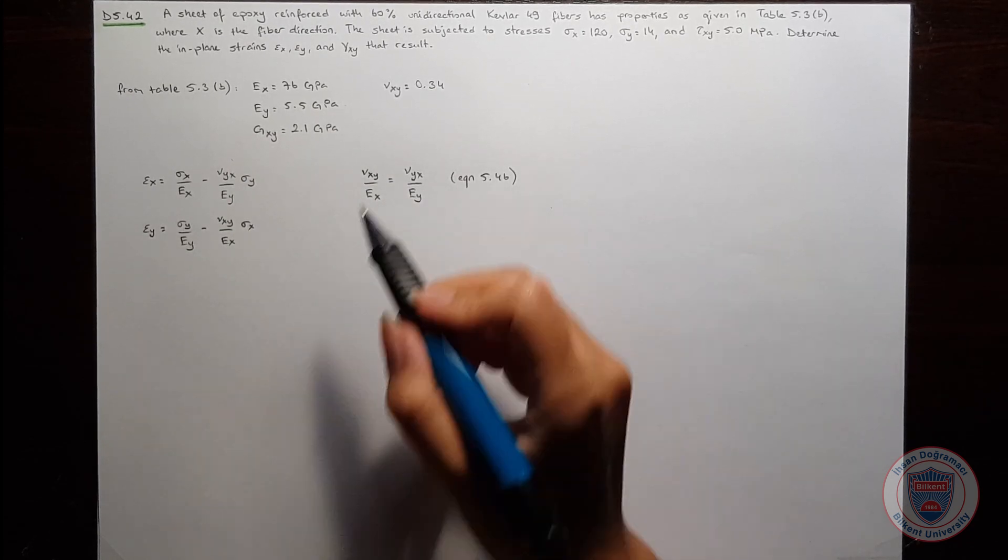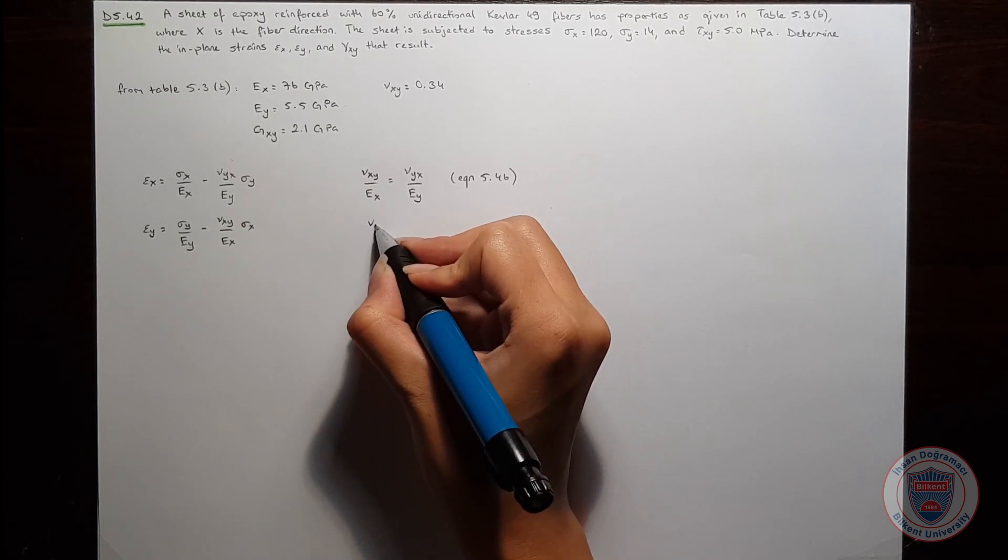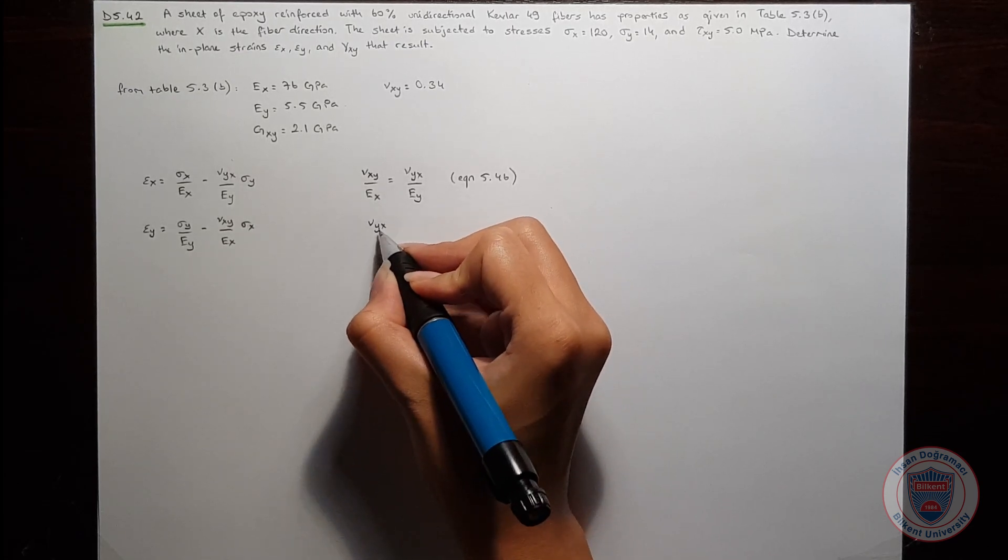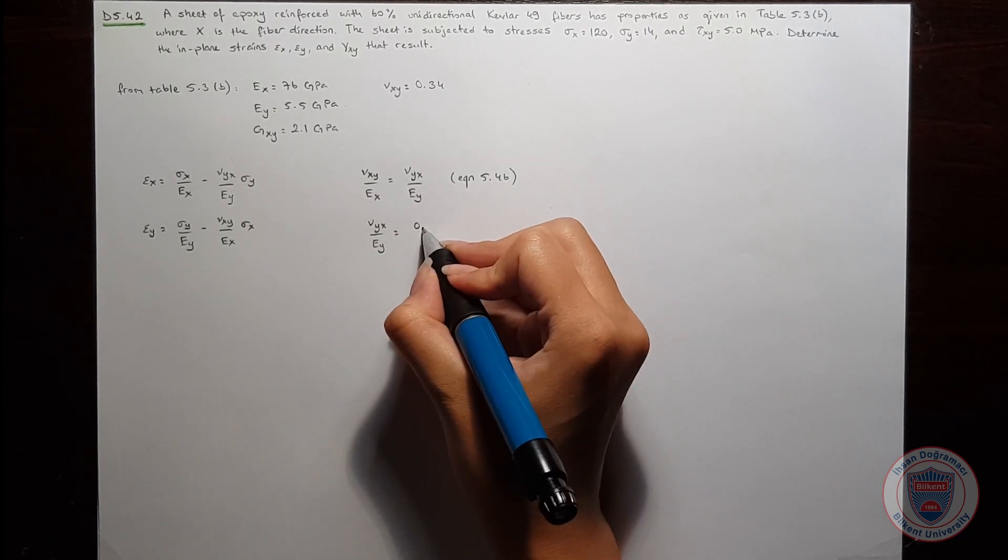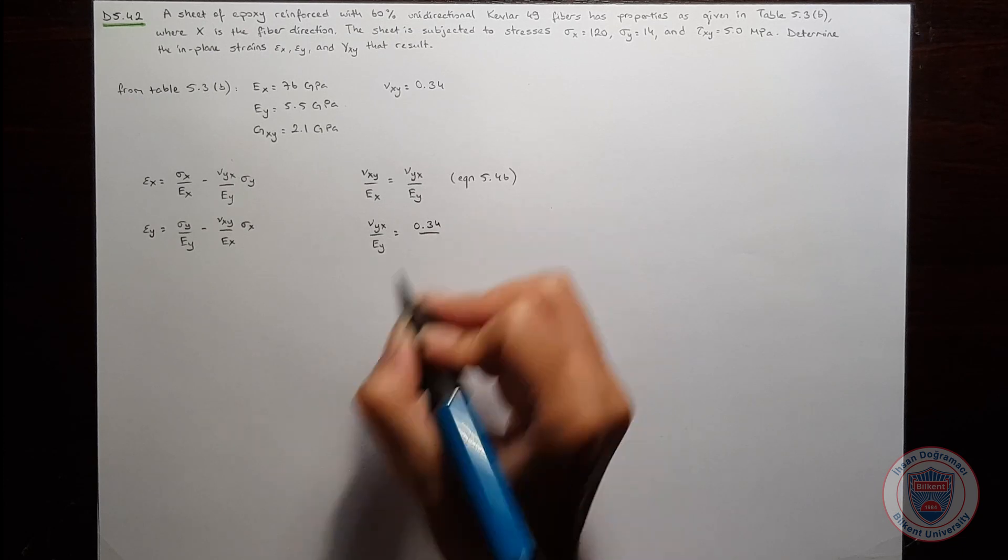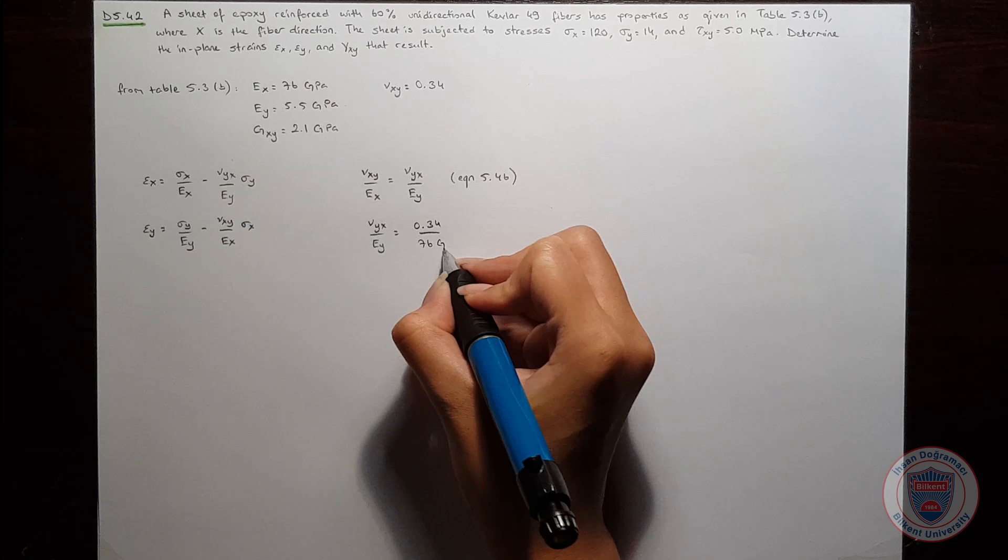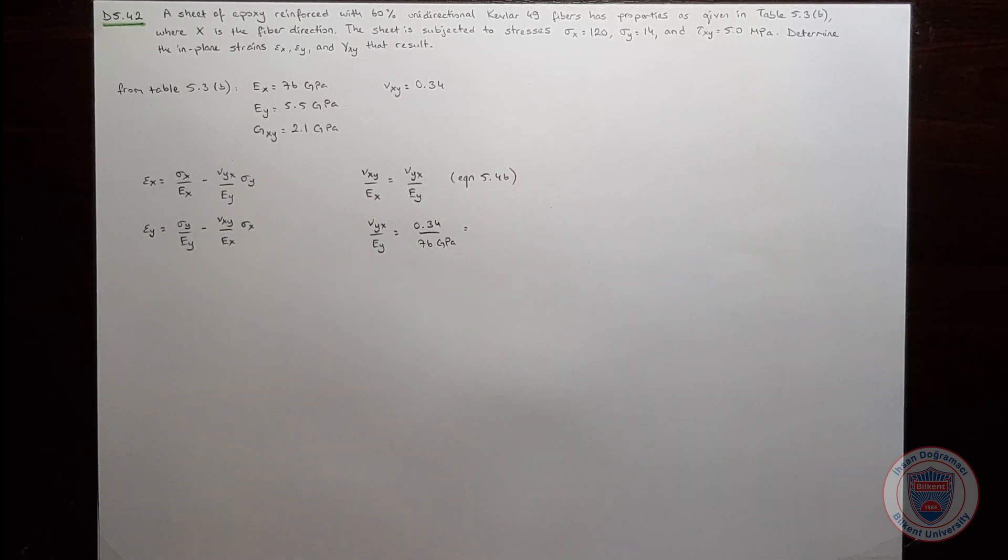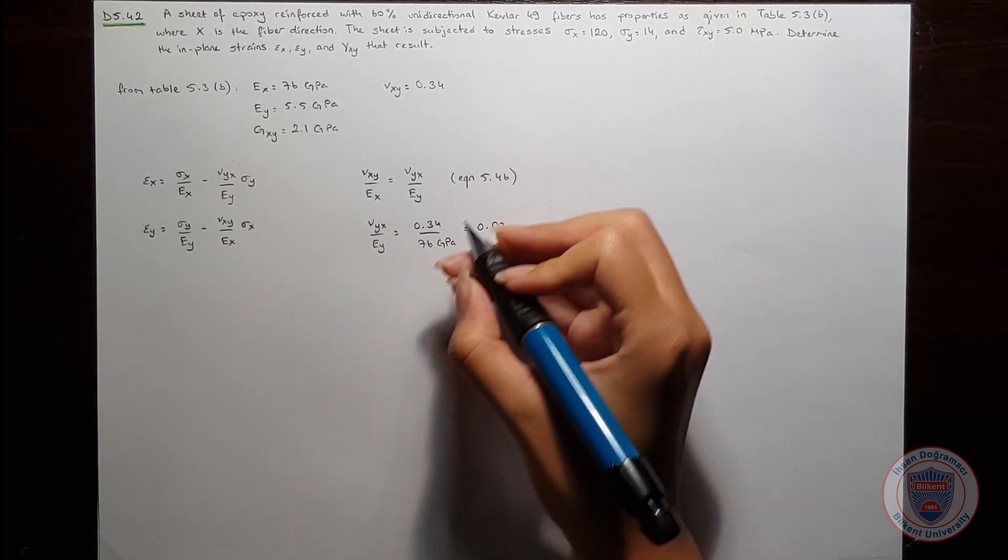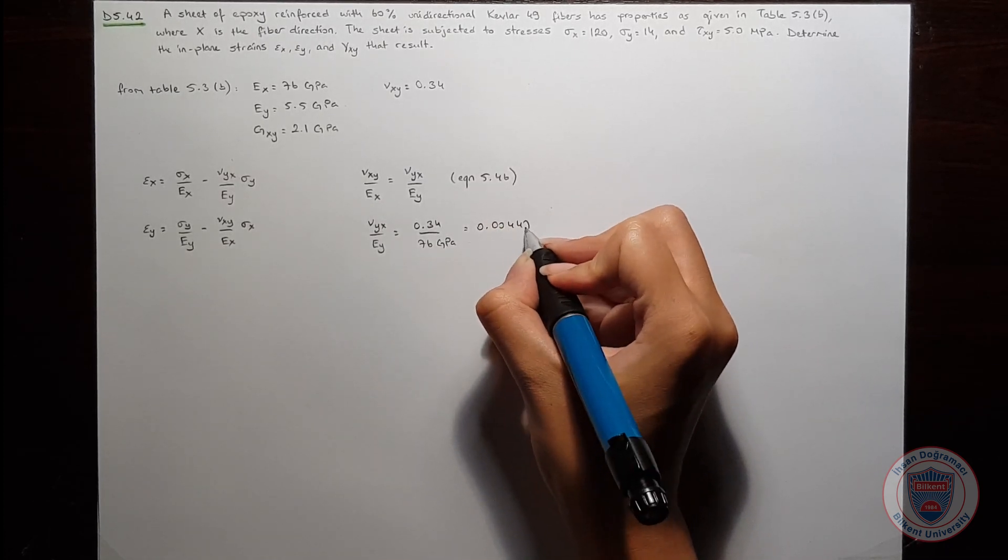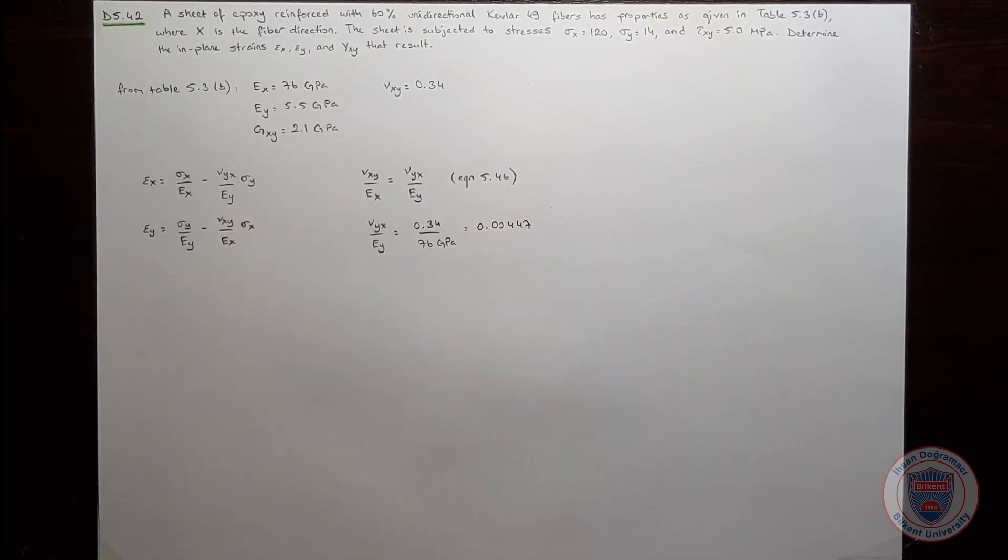When we look at the ratio, we see that nu YX over EY is equal to 0.34 over 76 GPa, and this is 0.00447. Now we also have this ratio.